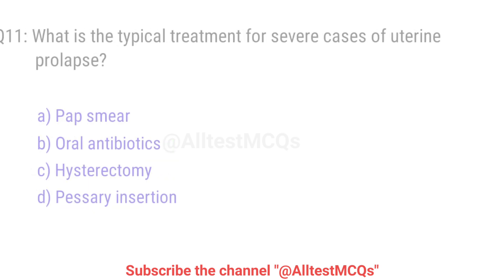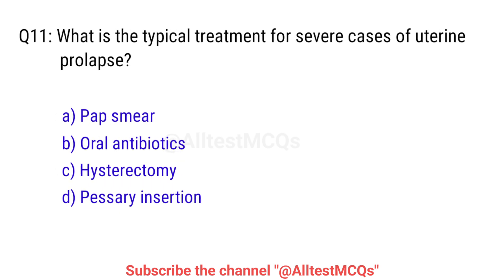Q11. What is the typical treatment for a severe case of uterine prolapse? The right answer is Option C: Hysterectomy.